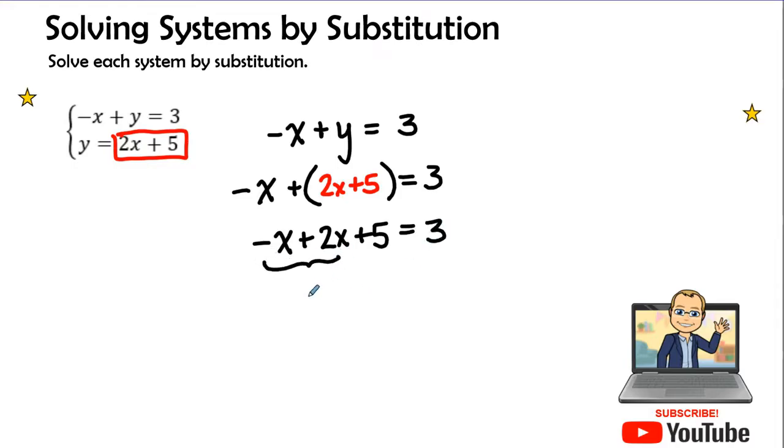So we have negative x plus 2x plus 5 is equal to 3. It looks like we have to do some combining like terms. So 2x minus an x leaves me x by itself. x plus 5 equaling 3. We're going to go ahead and add a negative 5 to both sides. This becomes 0. And then I go ahead and bring my x down. And 3 minus 5 is a negative 2. Therefore, my x value is negative 2.